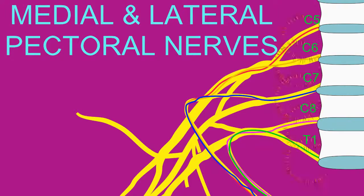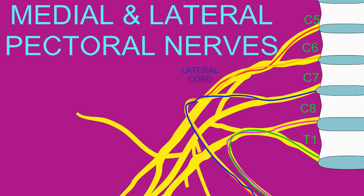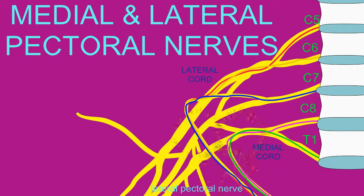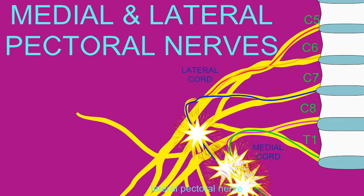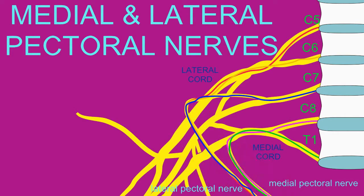Ventral rami of C5, C6, and C7 enter the lateral cord of the brachial plexus and form the lateral pectoral nerve, while the ventral rami of C8 and T1 enter the medial cord of the brachial plexus and form the medial pectoral nerve.